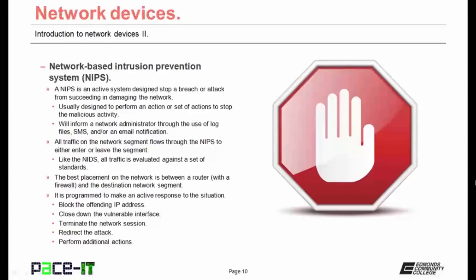Just like the NIDS, the NIPS will inform a network administrator through log files, text messages, voicemail, or email notifications. All traffic on the network is required to flow through the NIPS to either enter or leave the segment. Like the NIDS, all traffic is evaluated against a set of standards. The best placement on the network is between a router—which hopefully has a firewall—and the destination network segment. The NIPS is programmed to make an active response to the situation.